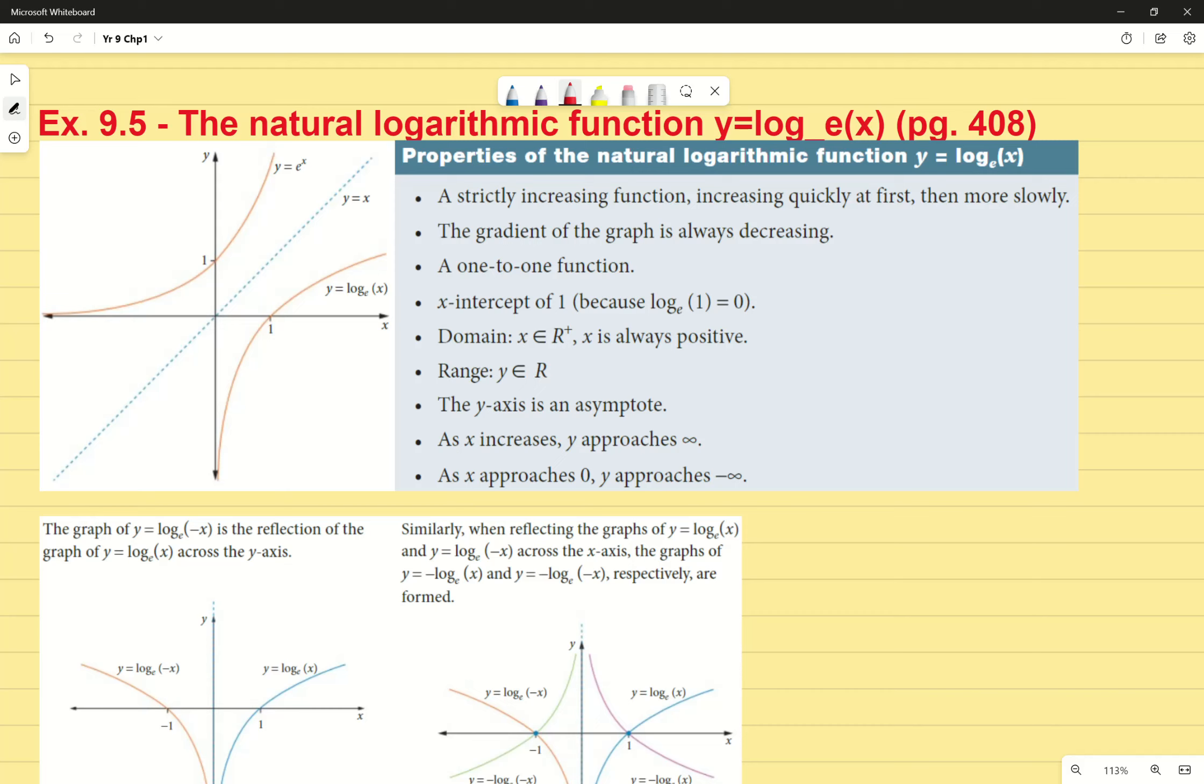A one-to-one function of course. It's x-intercept of 1 in our generic natural logarithmic function, x-intercept of 1 because log base e of 1 equals 0. Our domain is always going to be positive, where x is element of all real values, obviously excluding zero because it's not a positive real value.